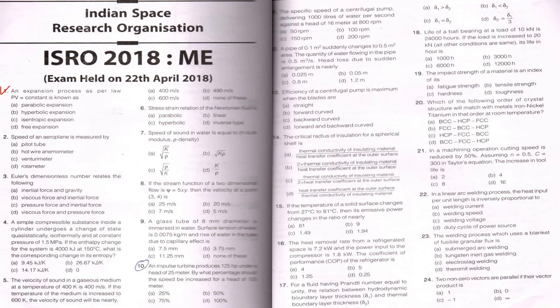Expansion process as per law PV is constant, correct answer is hyperbola. Speed of the aeroplane is measured by Pitot tube. Euler dimensionless numbers are related to pressure force by inertia force. A simple compressible substance inside a cylinder undergoes a change in entropy. Correct answer is 4.1. The velocity of sound in gaseous medium will be nearly, correct answer B, 495 meters per second.